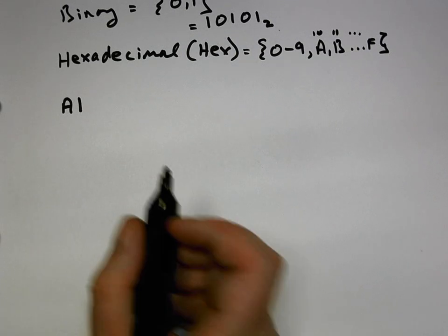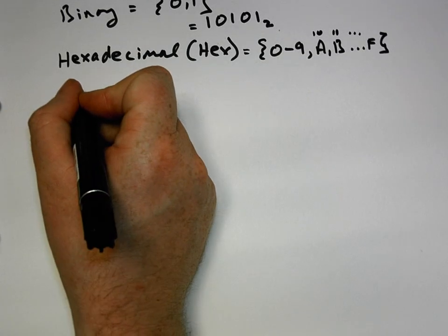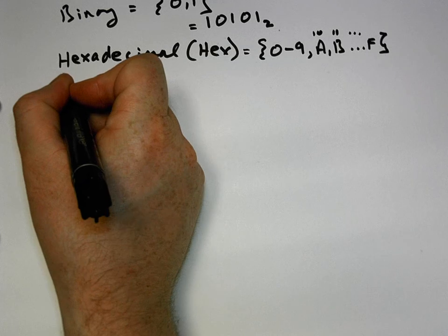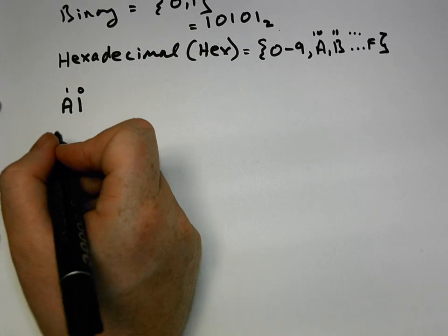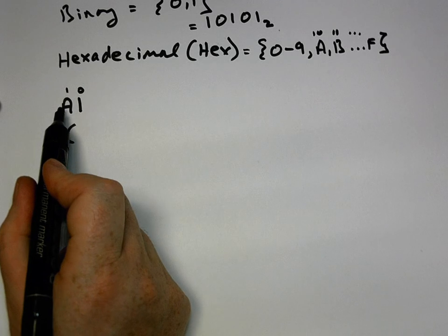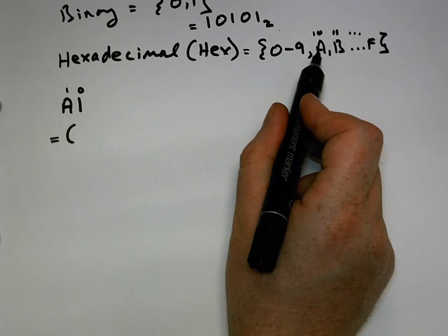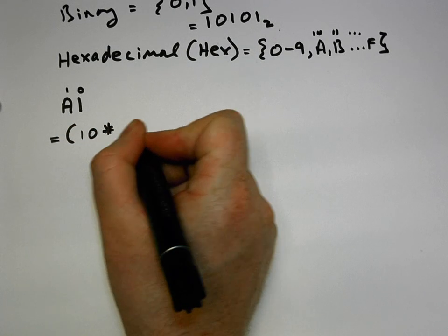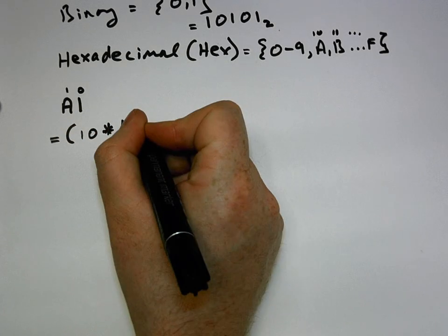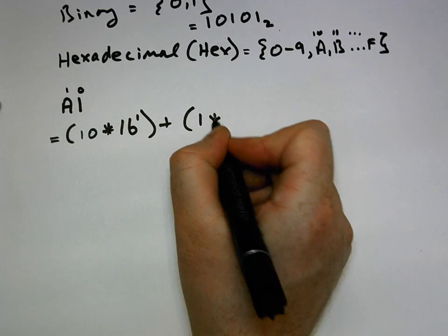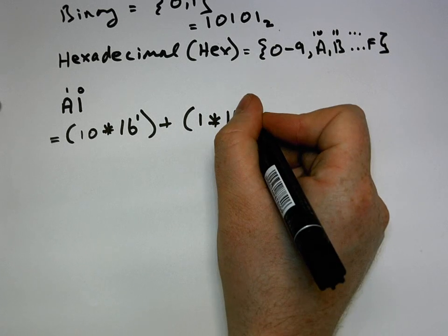It's a similar enough process. We look at the least significant digit, write a zero above that, and go from right to left, counting. So we go one step and write a one down. It's called a position value number system. To expand this hexadecimal out into a decimal number, we take A — A will be represented by the value ten — multiplied by the base of hexadecimal, which is sixteen, raised to the power of the index, which is one. Plus the number one, multiplied by base sixteen, raised to the power of zero.